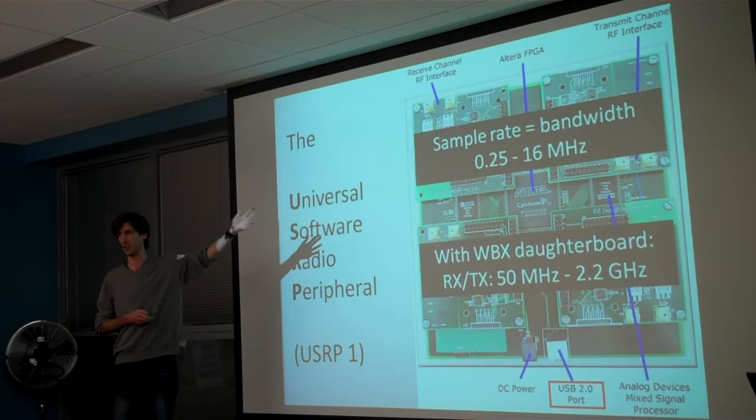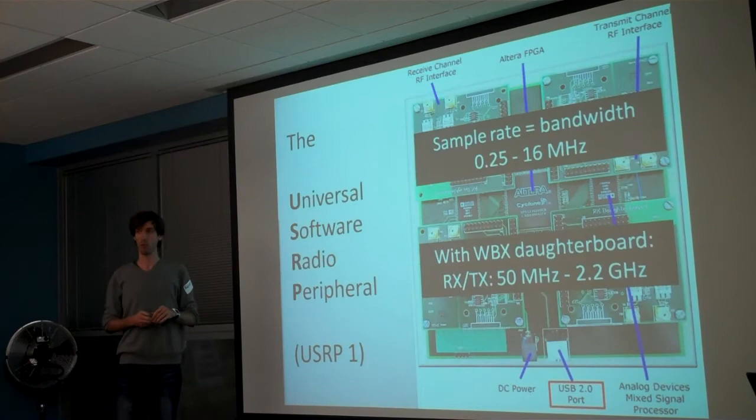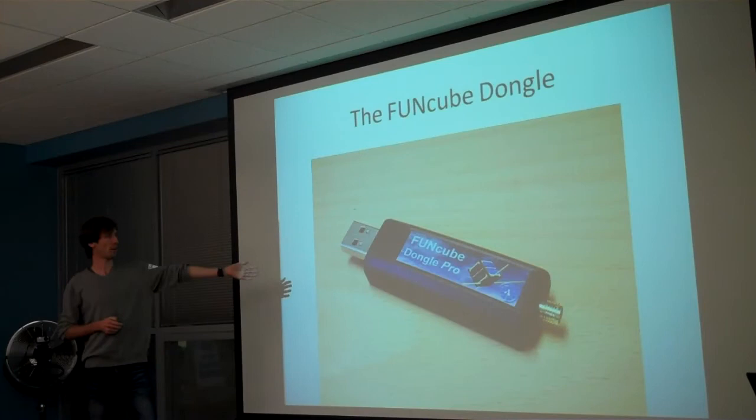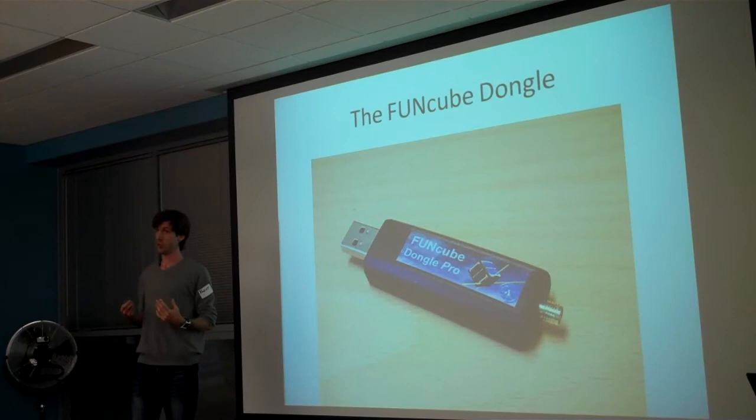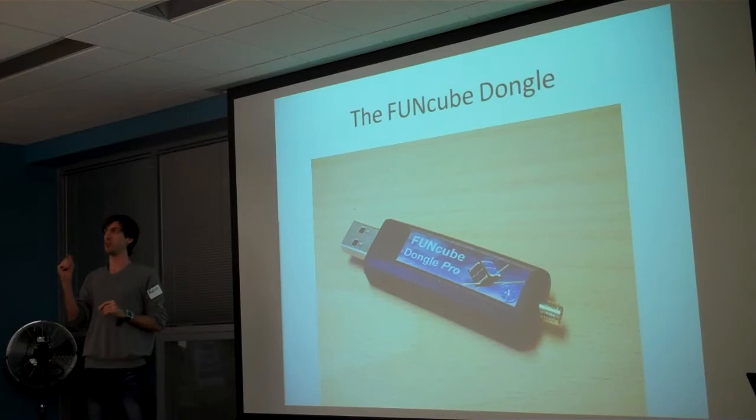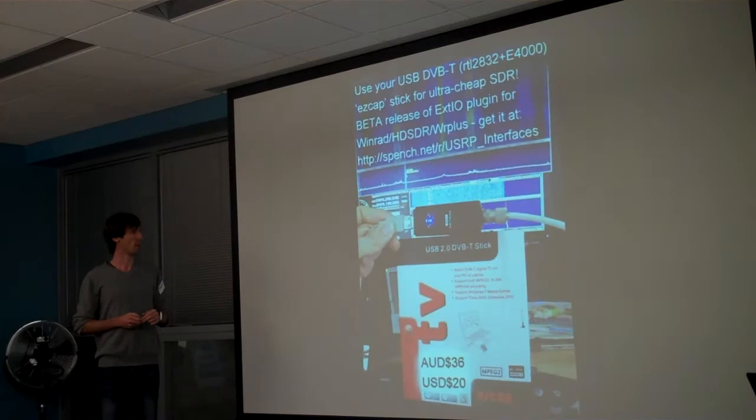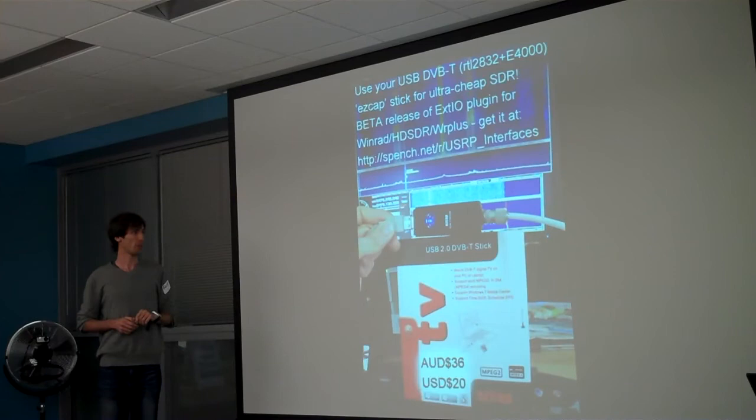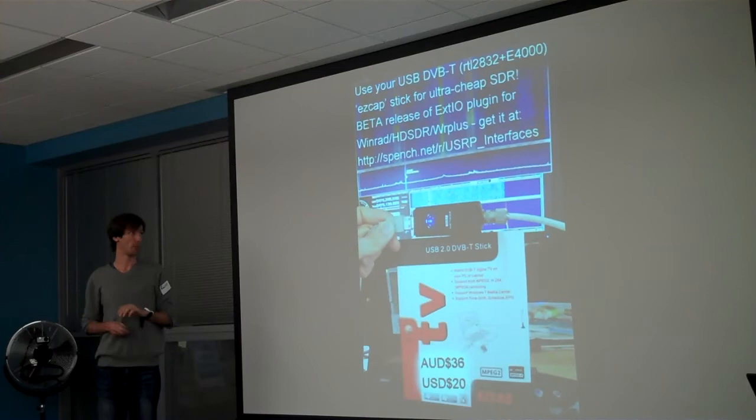This was the first popular well known software defined radio, the Ettus Research initial first flagship product. It's really neat because you hook it up to your computer via USB 2 and you can put these daughter boards on. Depending on what daughter board you put on it'll give you transmit and receive in certain frequency ranges. The one I was playing around with initially would give you transmit and receive between 50 megahertz and 2.3 gigahertz, quite a large spectrum, and you could actually sample data from the device at 64 megasamples per second, so that enables you to receive a 16 megahertz chunk of the radio spectrum.